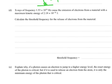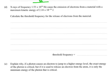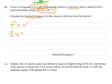D, we have x-rays of a frequency 1.53 times 10 to the 16 hertz, cause the emission of electrons from a material with a maximum kinetic energy of 2.18 times 10 to the minus 18 joules. Calculate the threshold frequency for the release of electrons from the material. Okay, so, frequency, we know, which is 1.53 times 10 to the 16. We have a maximum kinetic energy of the electrons of 2.18 times 10 to the minus 18.